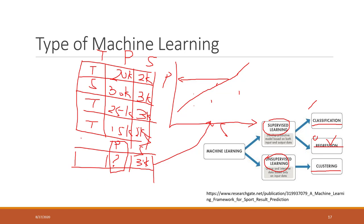If instead we want to predict the house type — we bring the size and instead of predicting price, we predict the house type — those are different categories, for example a townhouse or a single family house. In that case, if you want to predict the type of the house, that will be a classification method. That is the difference between classification and regression.